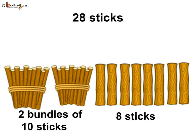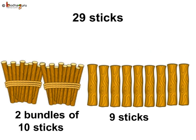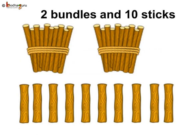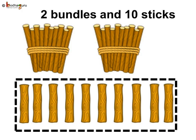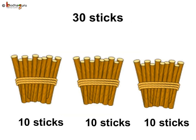It is 27. Same way, two bundles of 10 and 8 sticks means 28 sticks. Two bundles of 10 sticks and 9 sticks means 29 sticks. What if there are two bundles of 10 sticks and also loose 10 sticks? Let us make a bundle of the remaining 10 sticks. So, there are three bundles of 10 sticks. Three bundles of 10s means 3 tens or 30.